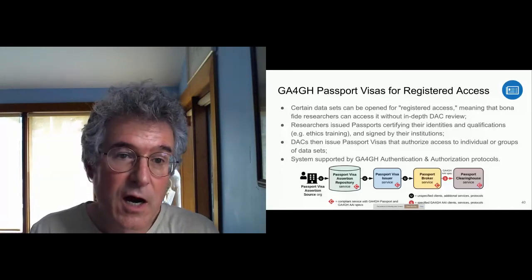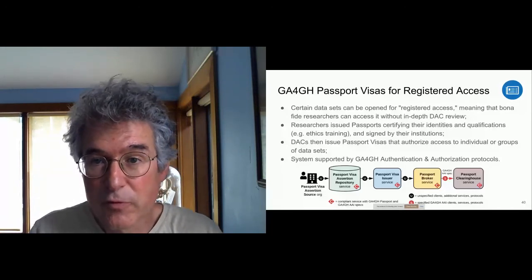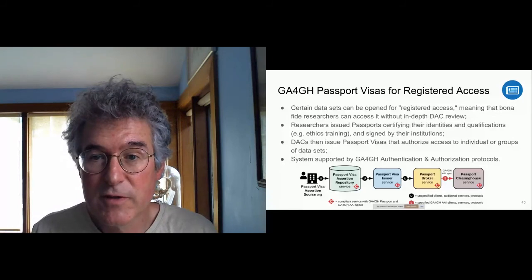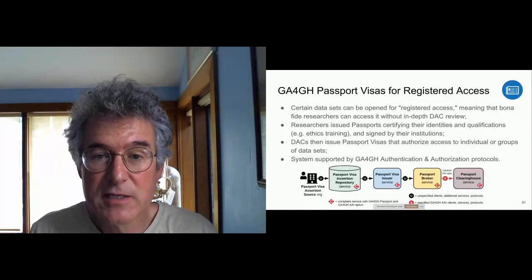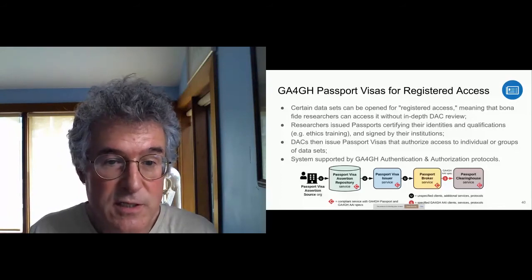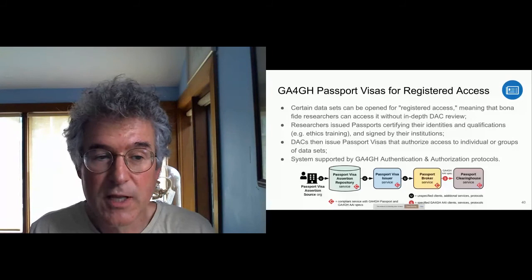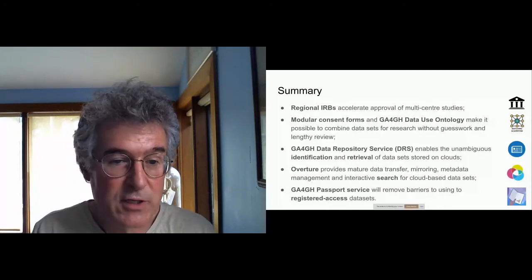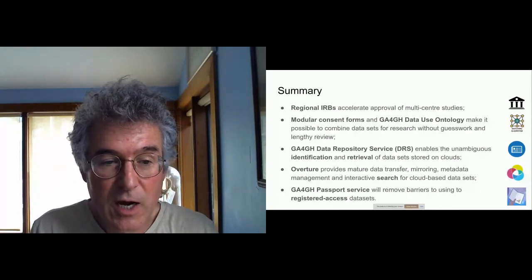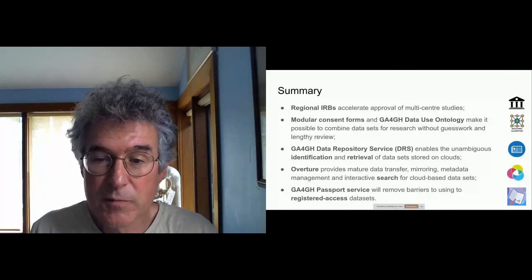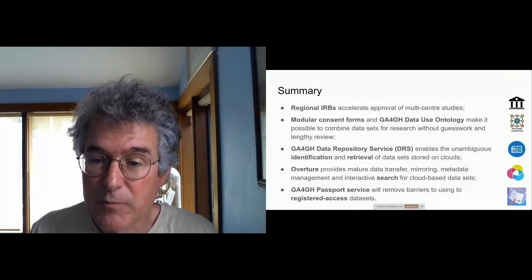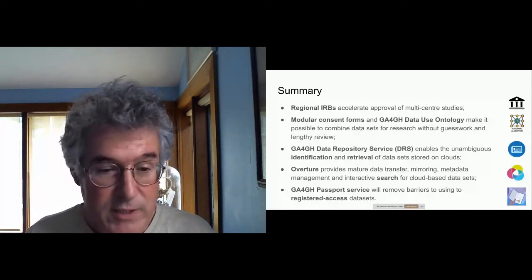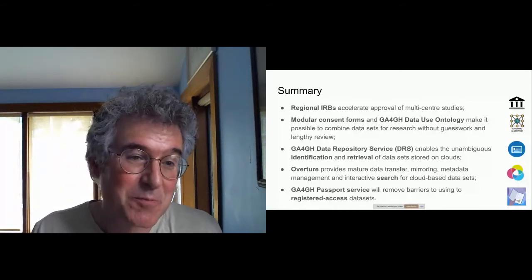To summarize: regional IRBs will accelerate the approval of multicenter studies. Modular consent forms and the data use ontology make it possible to combine datasets for research, removing guesswork and lengthy review. The Data Repository Service enables unambiguous identification and retrieval of datasets stored across clouds. The Overture system provides mature data transfer, mirroring, metadata management, and interactive search for cloud-based datasets. And finally, the Global Alliance Passport Service removes barriers to using registered access datasets.